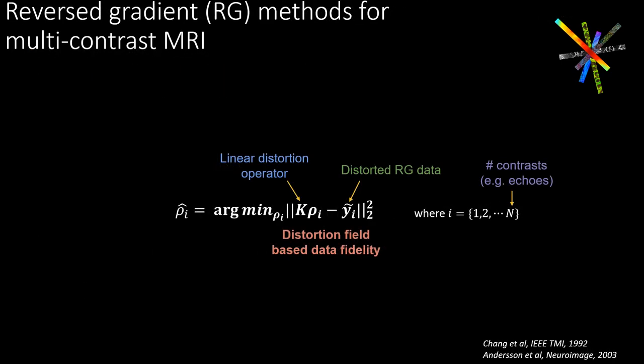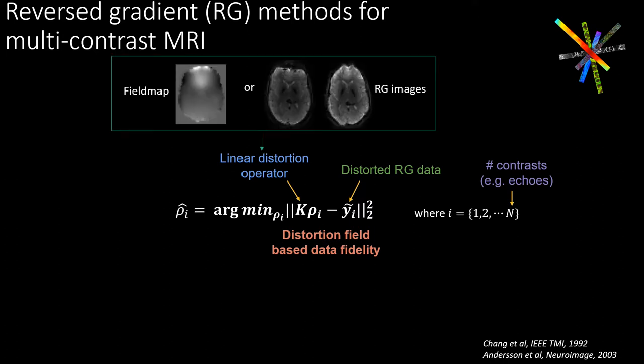Mathematically, reverse gradient approaches can be generalized as solving a distortion field based least squares problem for each contrast separately. The linear distortion operator here can be estimated from a field map or the reverse gradient images themselves.